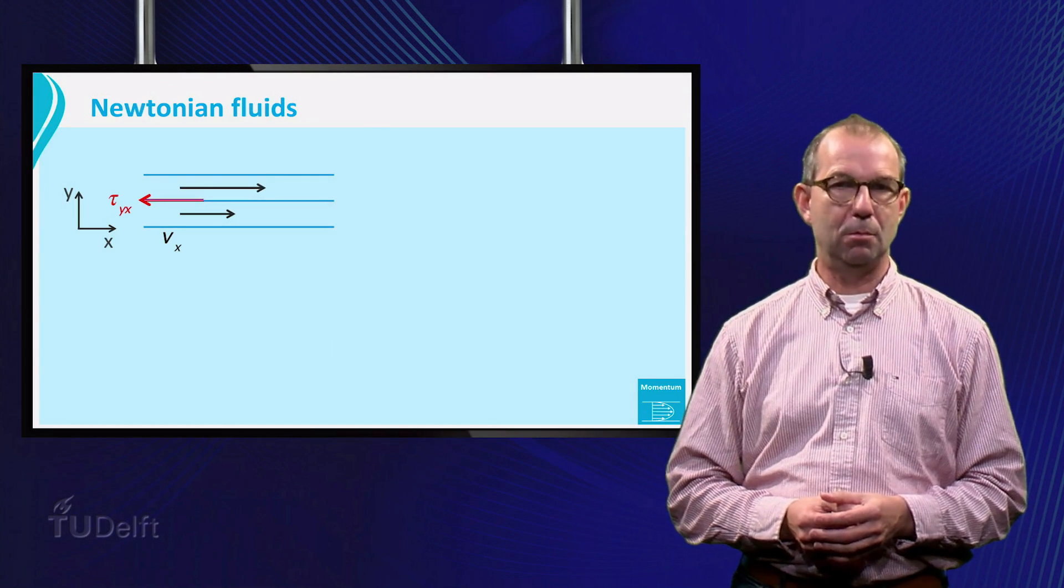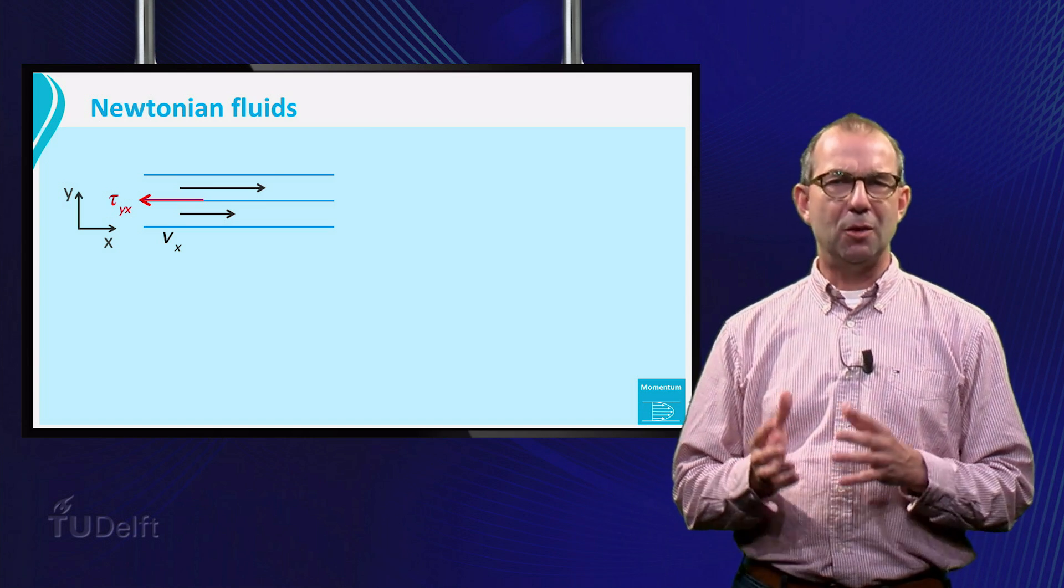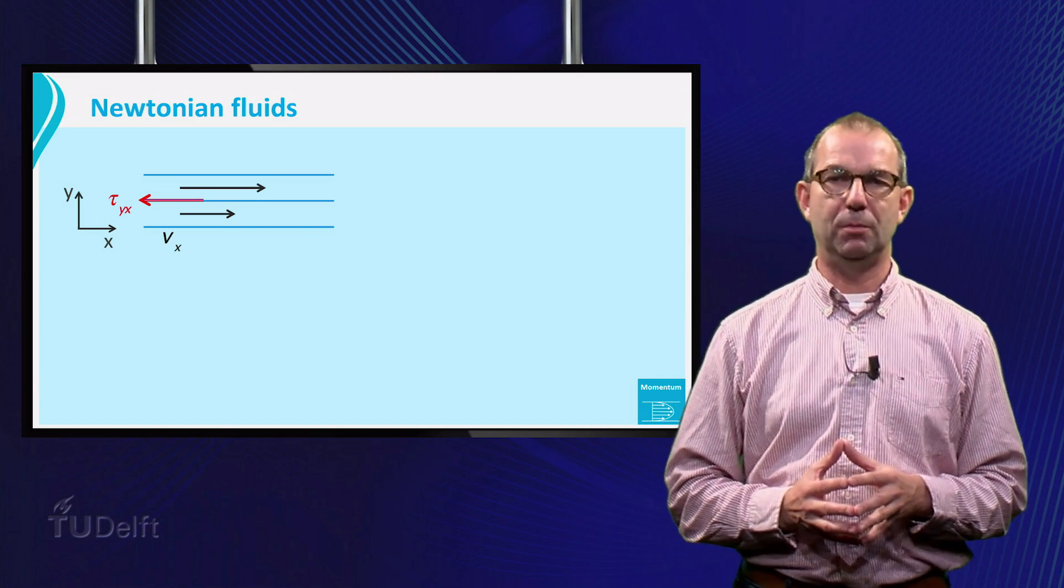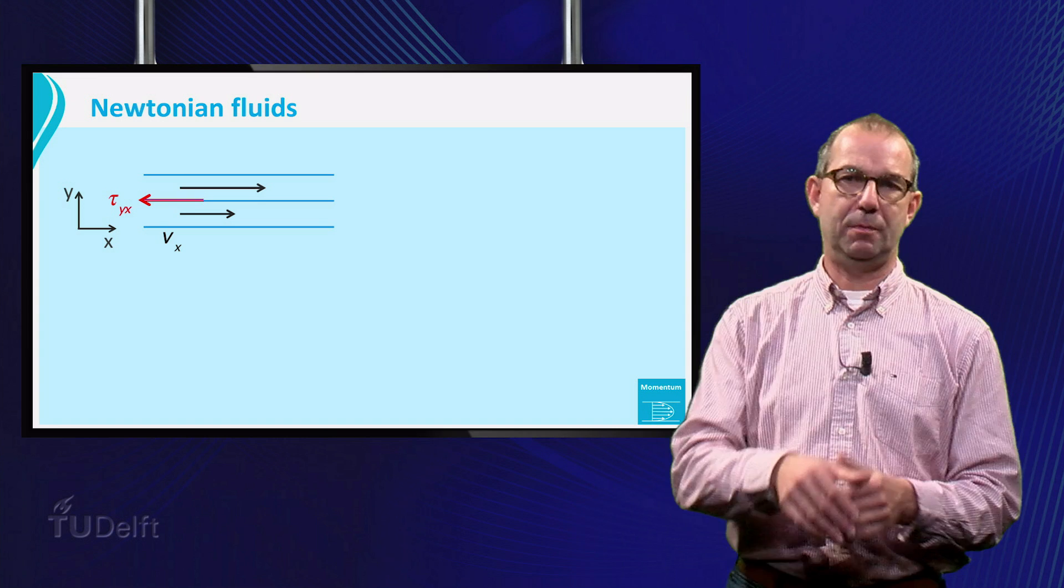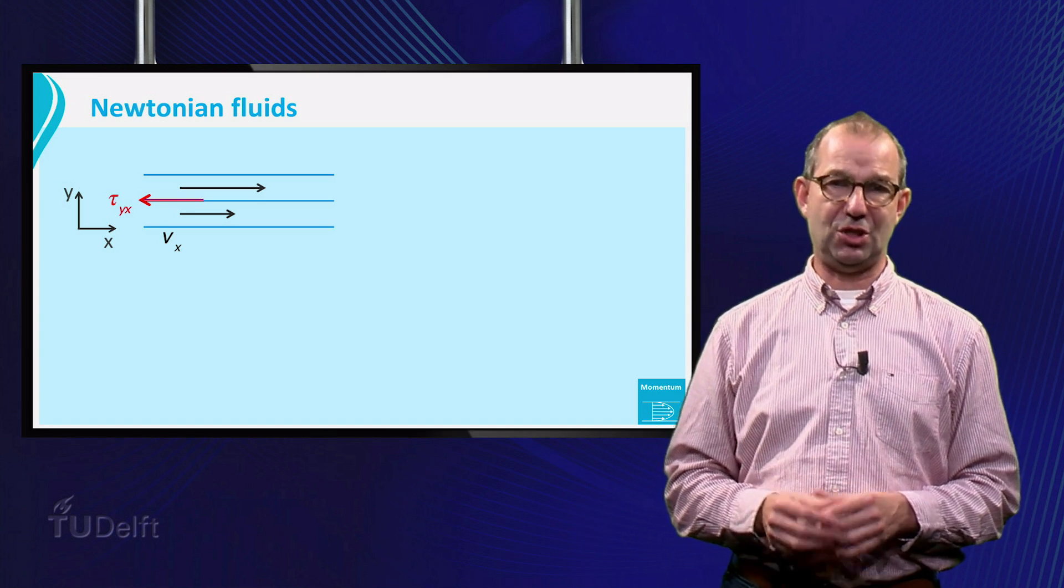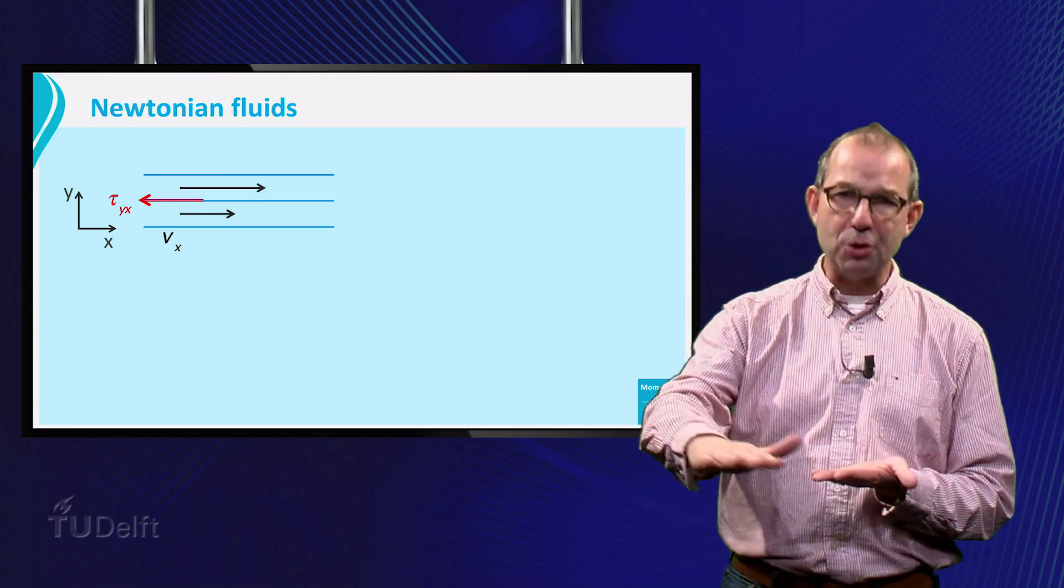As discussed, momentum can be transferred via convection or diffusion. Rather than diffusion of momentum, we could also view this as a friction between two layers. These two layers are stacked in the y direction and they have a different x component of velocity.